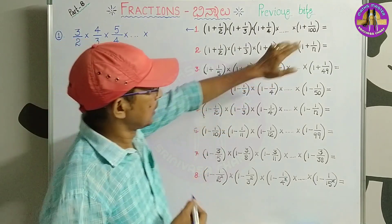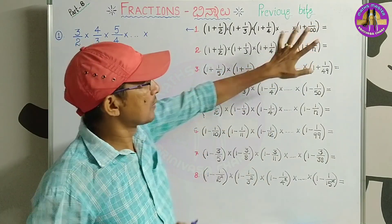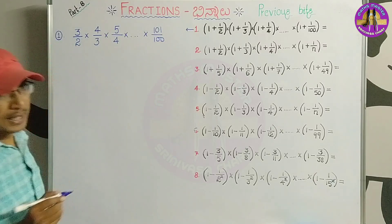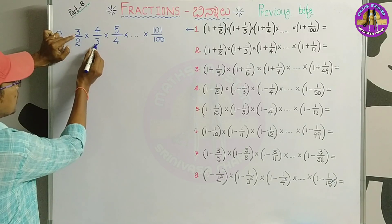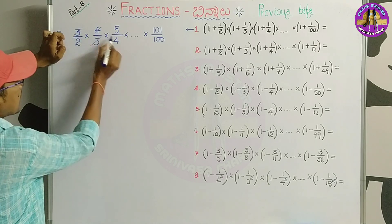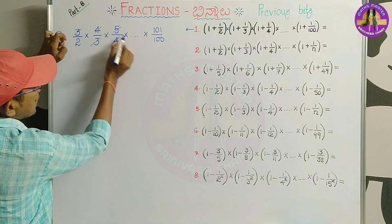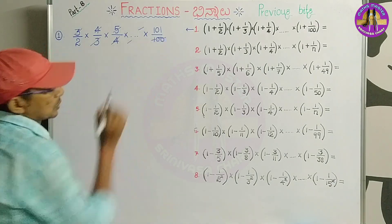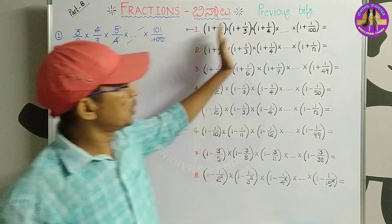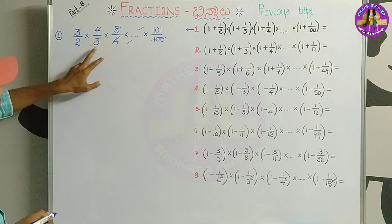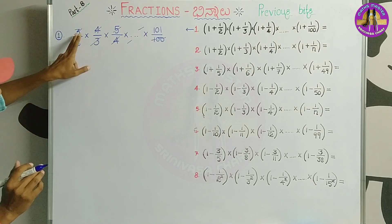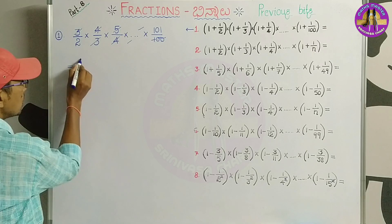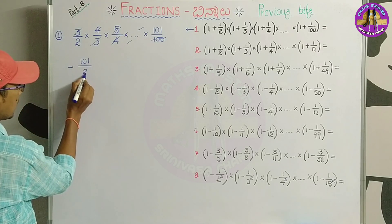Continuing the same pattern up to 1 plus 1 by 100, which gives 101 by 100. By cancellation, consecutive numerators and denominators are the same, so they cancel. The denominator of each fraction cancels with the numerator of the next fraction. Only the last fraction's numerator and the first fraction's denominator remain.